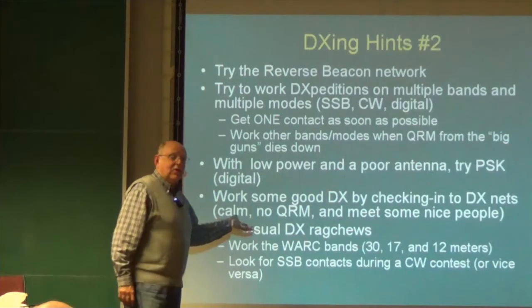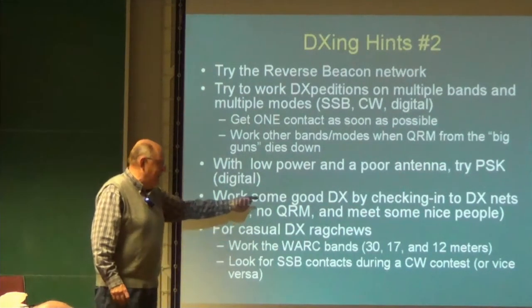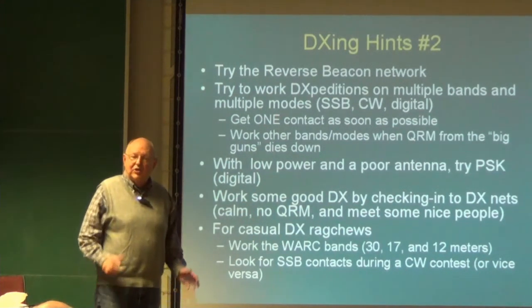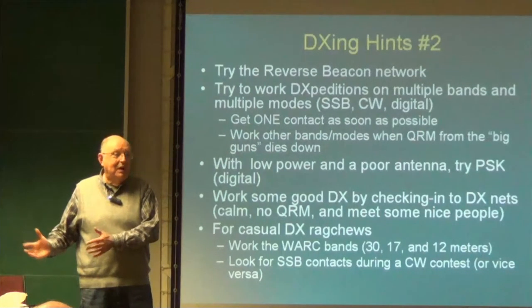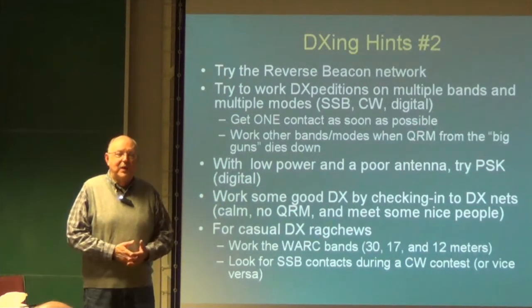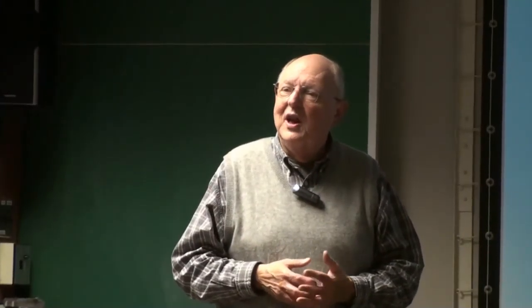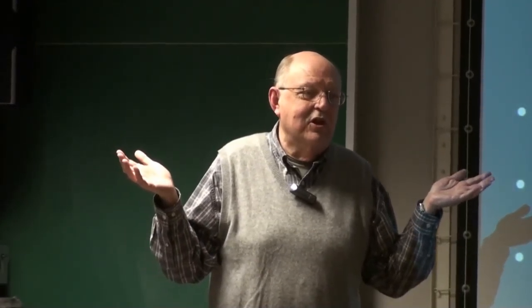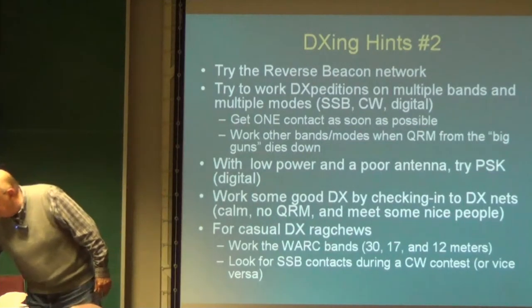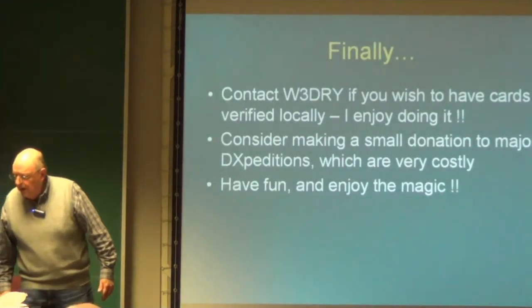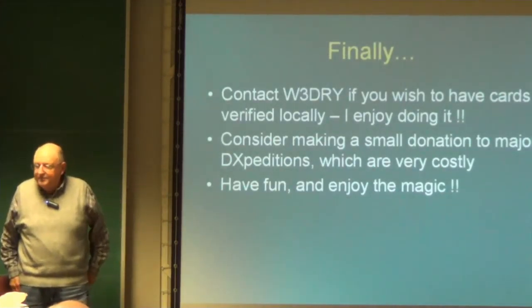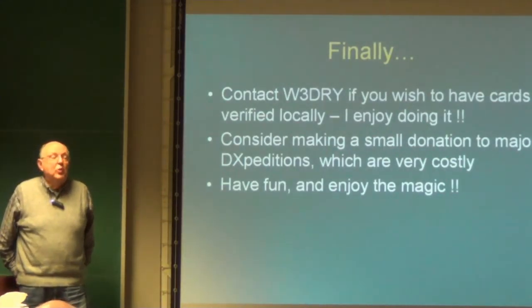For casual ragchews, 30, 17, and 12 meters are bands of choice. I look for single sideband contacts when the big boys are busy during a CW contest — they're all down in the CW portion beating each other up, so I go up to the upper end of the band on sideband where there's no contest, and there are a few friendly stations up there for a nice conversation.